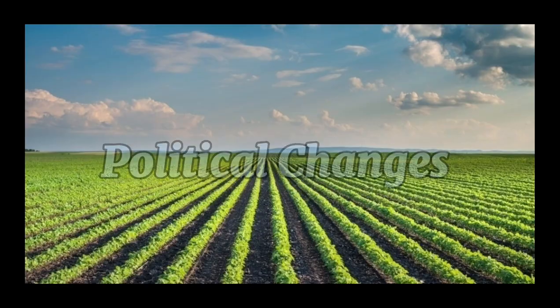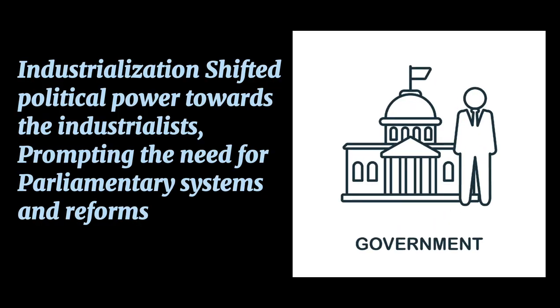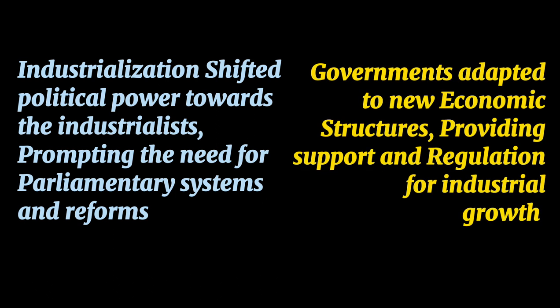Examining the far-reaching impacts of the Industrial Revolution, let us unravel the consequences it brought to politics, economics, and society. Politically, industrialization shifted power towards industrialists, prompting the need for parliamentary systems and reforms. Governments adapted to new economic structures, providing support and regulations for industrial growth.